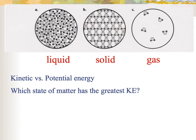Let's review some terms we talked about at the very beginning of the semester: kinetic energy and potential energy. Kinetic energy is the energy of motion for particles that are moving. Potential energy is stored energy for objects that are not moving — it's storing the energy to do work later. Based on the three states of matter, gases have the greatest kinetic energy since they're moving around the most, while solids have the least amount of kinetic energy.